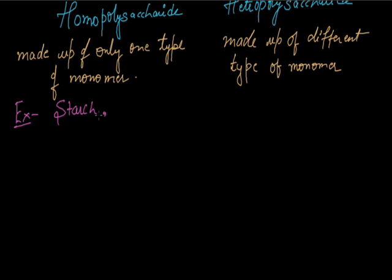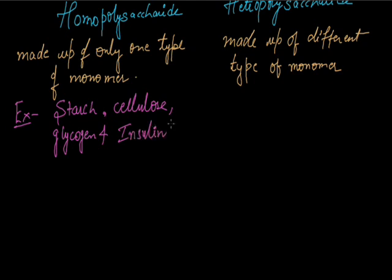For example, in the case of homopolysaccharide, these are starch, cellulose, glycogen and inulin. These are the examples of homopolysaccharide as they are made up of single sugar monomer unit.